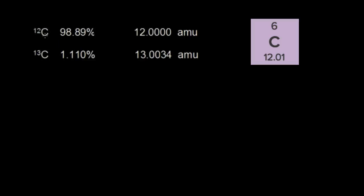What we have listed here, we know that carbon-12 is the most common isotope of carbon on Earth. 98.89% of the carbon on Earth is carbon-12, and we know that by definition, its mass is exactly 12 atomic mass units.